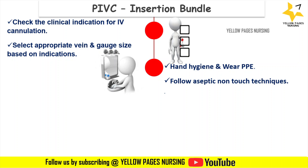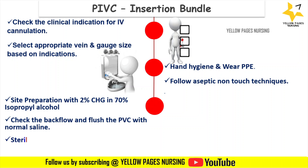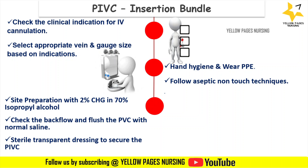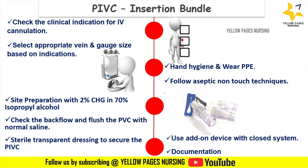Make sure a new cannula is used for each attempt. Prepare the site with 2% chlorhexidine and 70% isopropyl alcohol, and ensure the area is dried before insertion. Check for backflow and flush the peripheral venous catheter with normal saline. Apply a sterile transparent dressing to secure the PIVC. Use an add-on device with a closed system, which prevents backflow and facilitates easy medication administration.